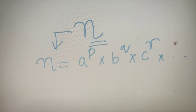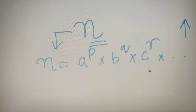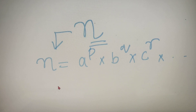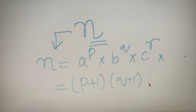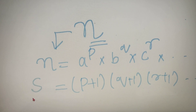Now if you have any doubt on the topic of prime factorization, I have made a separate video on it. So you can go check that out and then come back to this video. After writing the number in its prime factorization form, we simply get our answer by finding the value of (p+1) into (q+1) into (r+1) and so on. This gives us the number of factors.